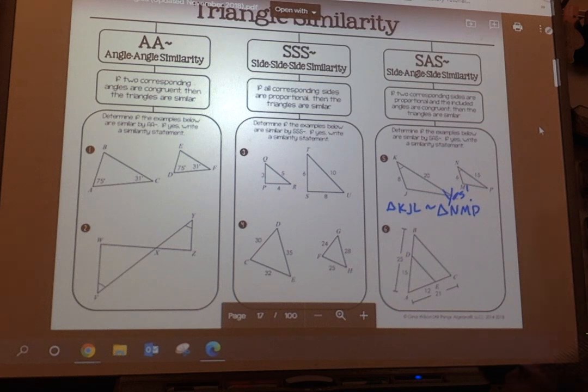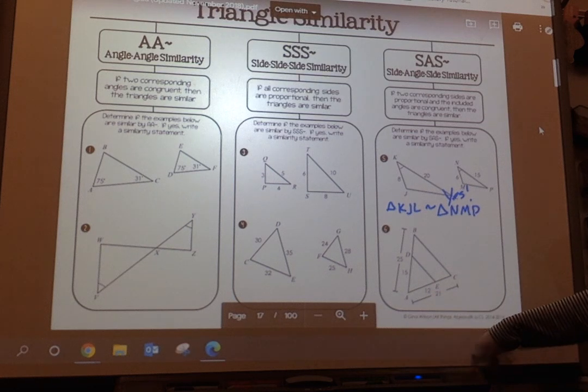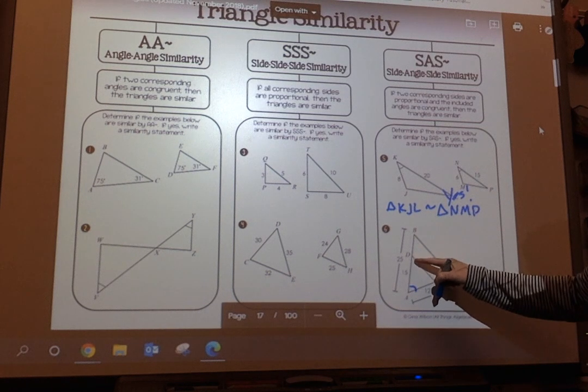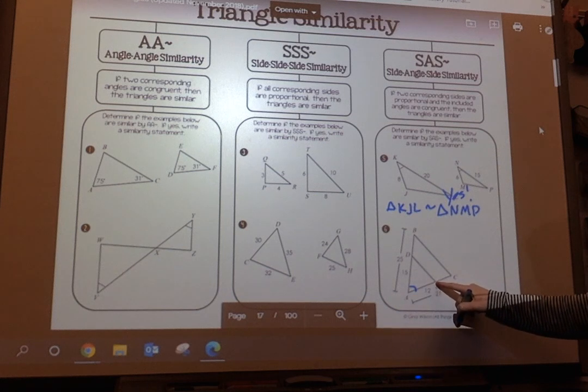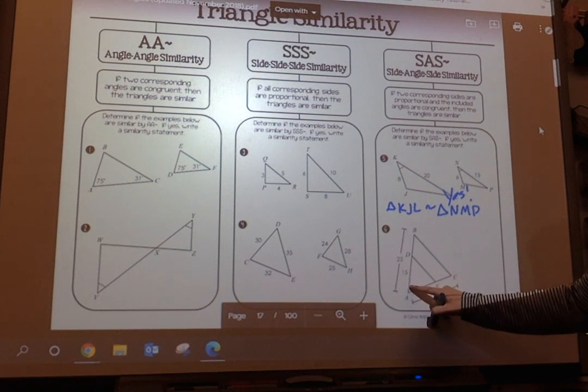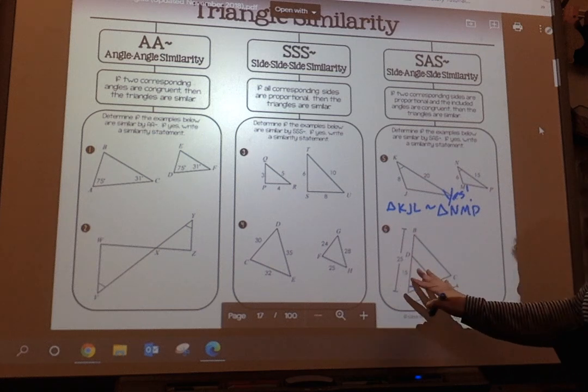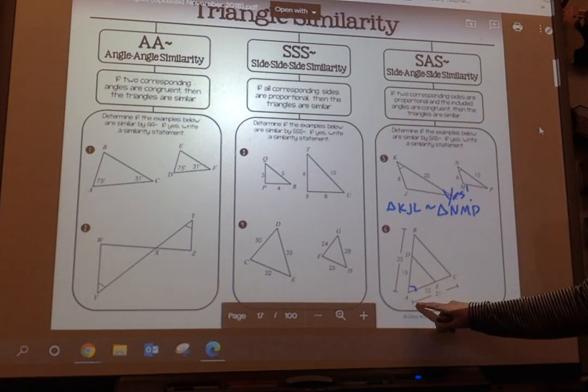All right, let's look at number 6. So I'm going from—this angle is equal, whether it's triangle DAE or triangle BAC, that angle is the same. So I know my angles are congruent, but let's check out my proportions.